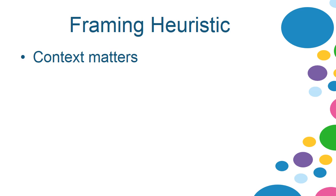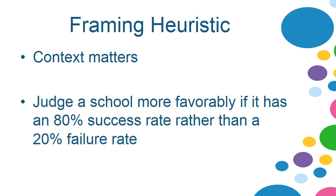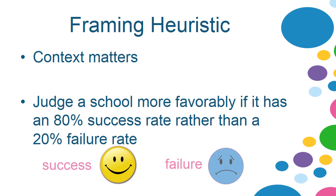The framing heuristic essentially says context matters. If you're presented information about a school, you'll judge it more favorably if it has an 80% success rate rather than a 20% failure rate — even though those two things say the same thing. The word 'success' is positive and we feel good about it, whereas 'failure' is not a good word. So if you frame something in terms of success, people think more positively about it than if you frame it in terms of failure. That's the framing heuristic.